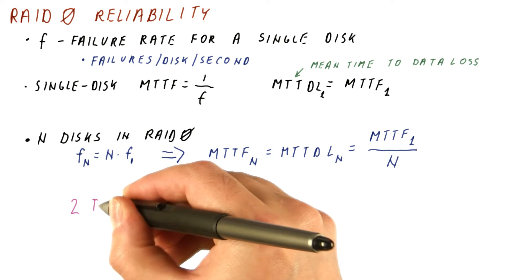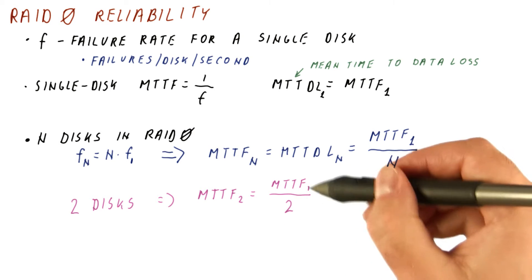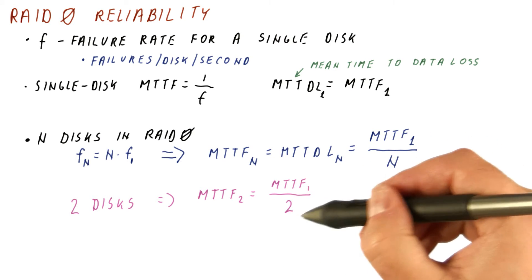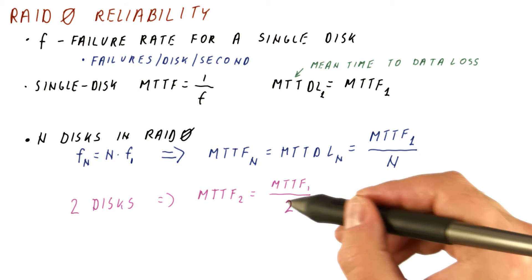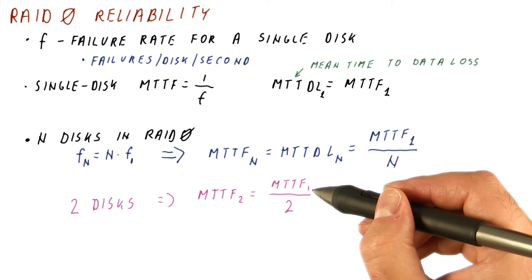So if you have two disks, the MTTF of the RAID 0 array with two disks will be half of the MTTF of a single disk. A single disk typically will have the MTTF on the order of 10ish years to maybe 100 years.